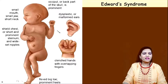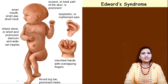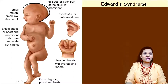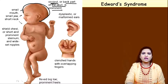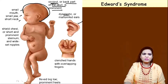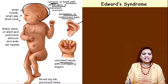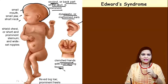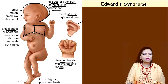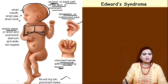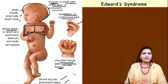What are the symptoms in a child born with Edwards syndrome? The back part of the skull — called the occiput — is prominent and much larger than normal. The mouth is small, the jaw is small, and the neck is short. The ears will be malformed or dysplastic. The hands are clenched with overlapping fingers. There is a shield-shaped chest, with a short and prominent sternum, widely spaced nipples, and flexed toes with a prominent heel.